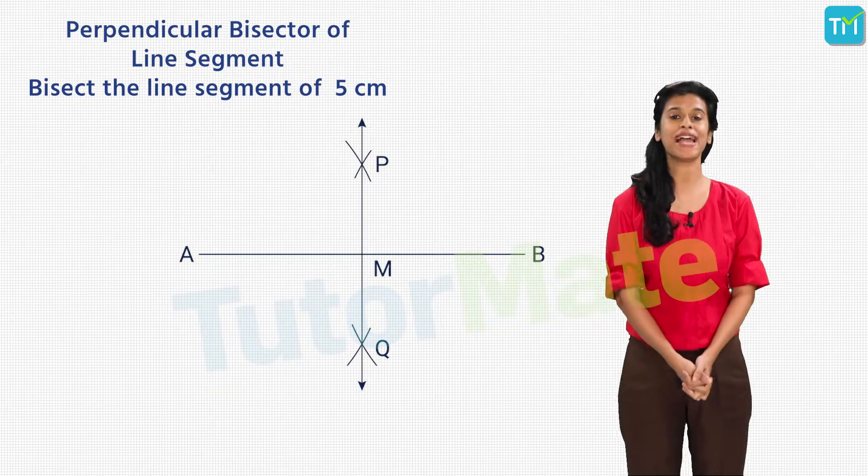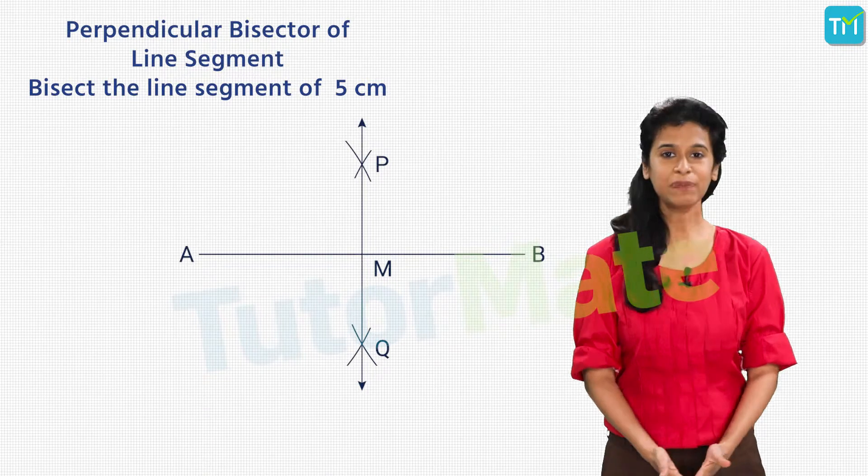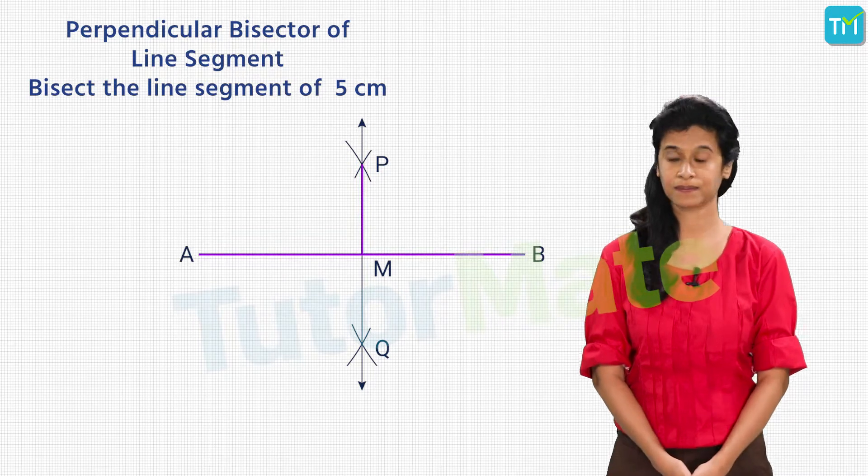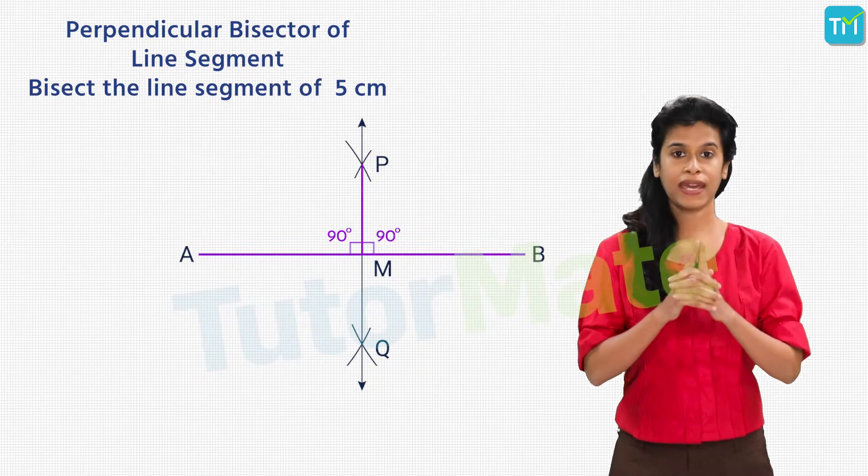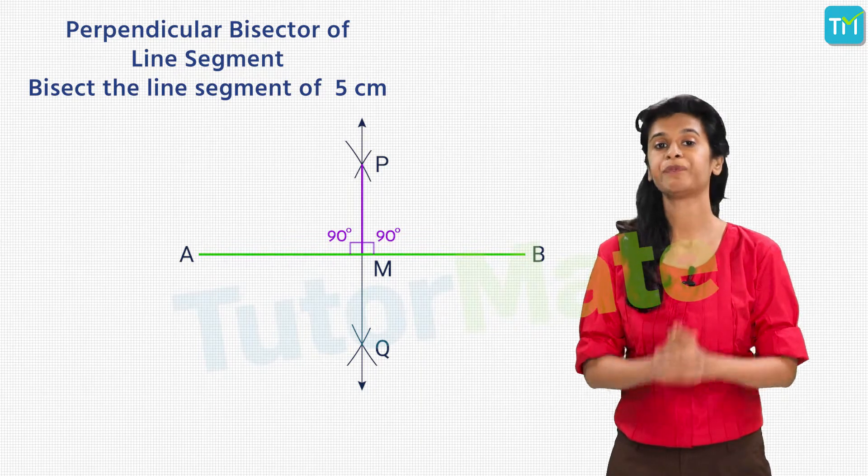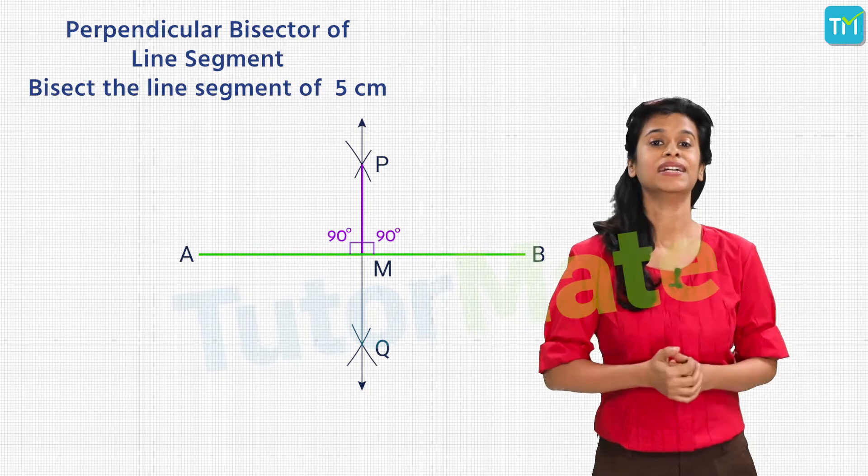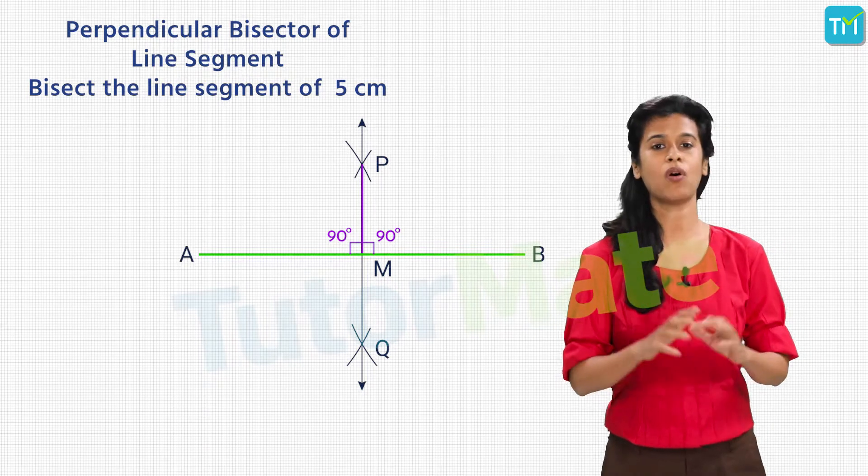Then join PQ. Let's label the point at which PQ cuts AB as M. PQ is now the perpendicular bisector of AB. How do we verify this? Simple. Measure angles PMA and PMB. Both should be 90 degrees. The lengths of AM and BM should also be equal. Again, can we verify this theoretically? Yes, we can.